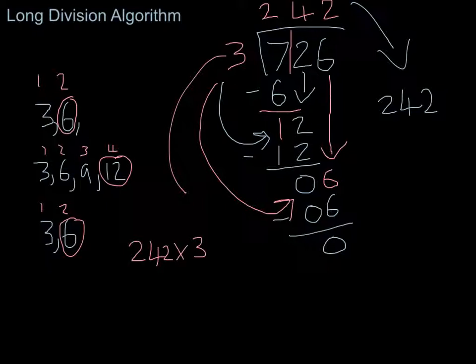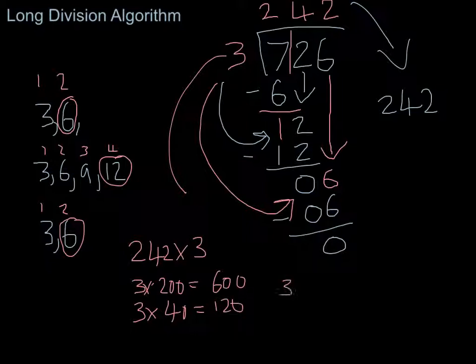So three times 200 equals 600. Three times 40 equals 120. Three times two equals six. And if I add those up, I get 726.